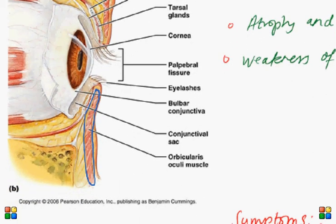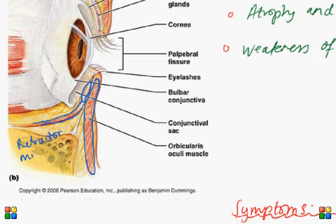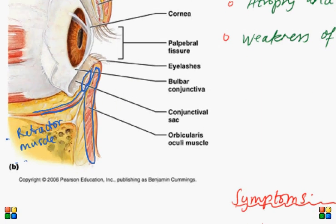We're only going to focus on the lower lid as the involutional entropion is restricted only to the lower lid. This is the tarsal plate here and attached to the tarsal plate is the retractor muscle. Also continuous with this is the orbital septum which also attaches to the tarsal plate.